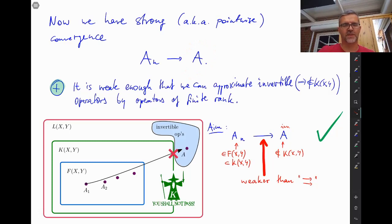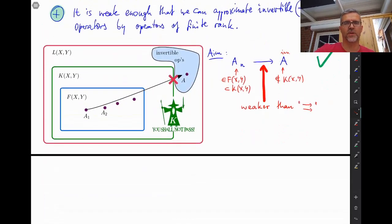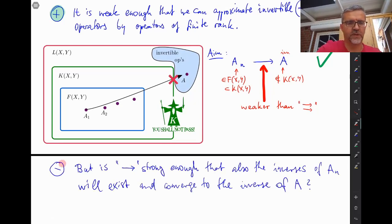Okay, so this is the new question here. Let me start it with a minus because it's not going to get any better than last week. Okay, so here it is. The question is whether strong convergence is strong enough that also the inverses of our approximants would exist and converge